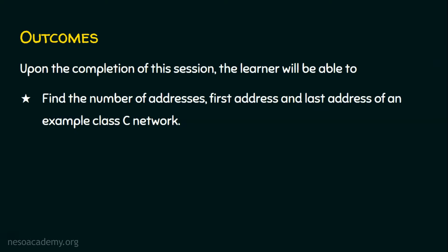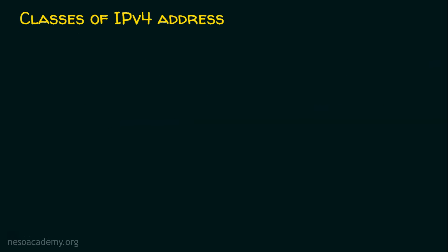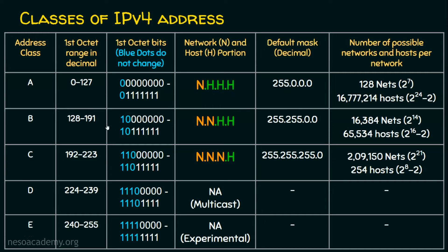In this lecture, we are going to solve a problem that involves the Class C network. We know there are basically five classes of IP addresses: Class A, B, C, D, and E. We are going to focus on a Class C example today. The first octet of a Class C address will be between 192 and 223.